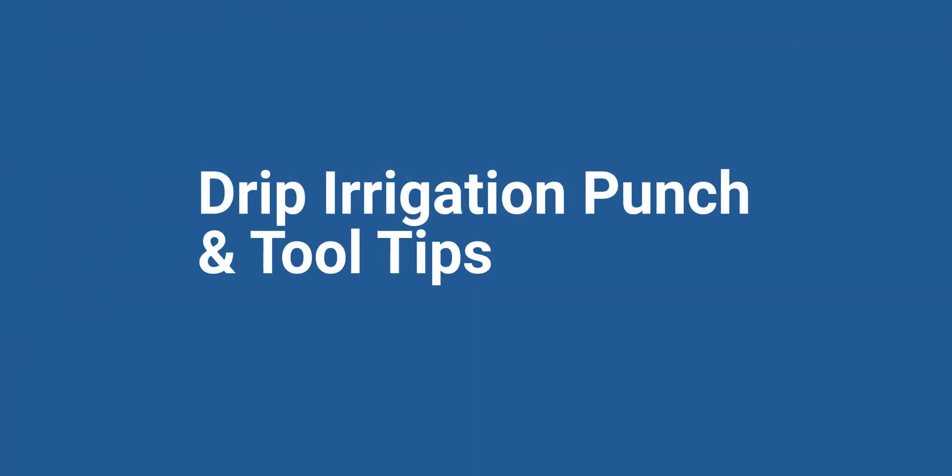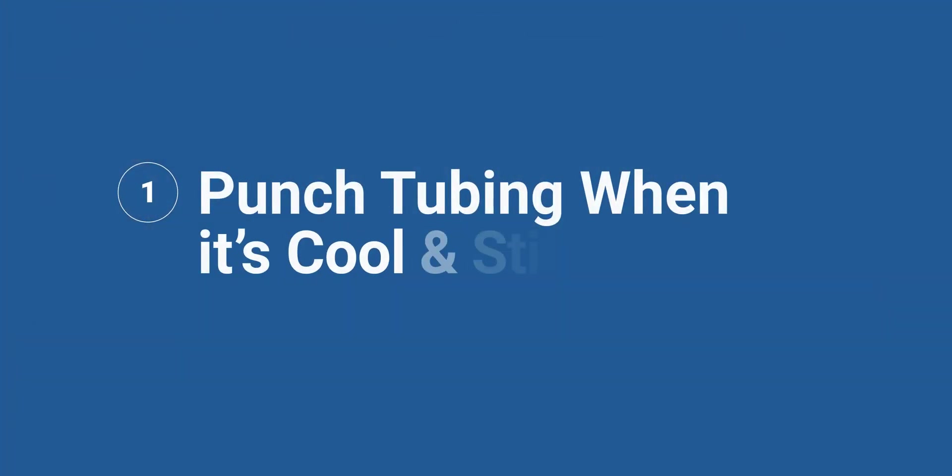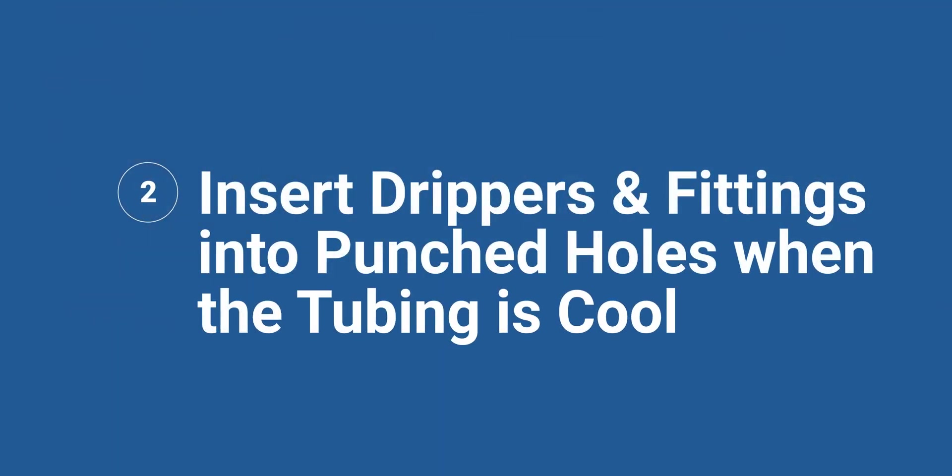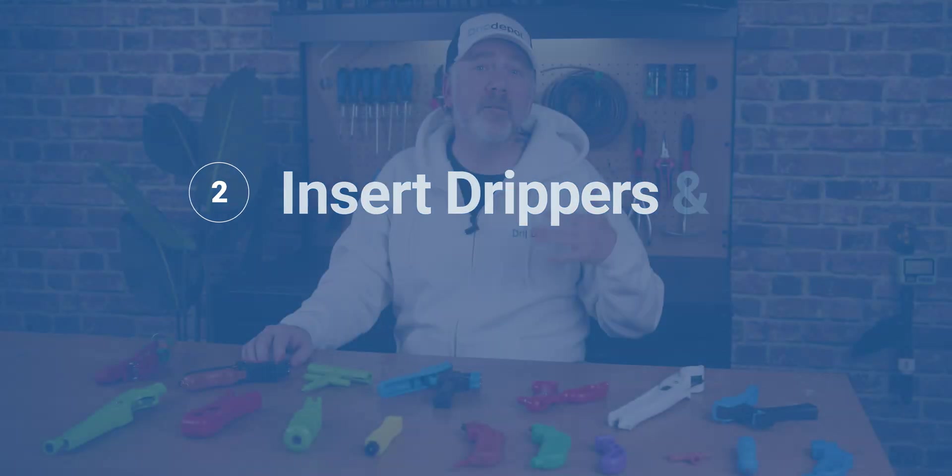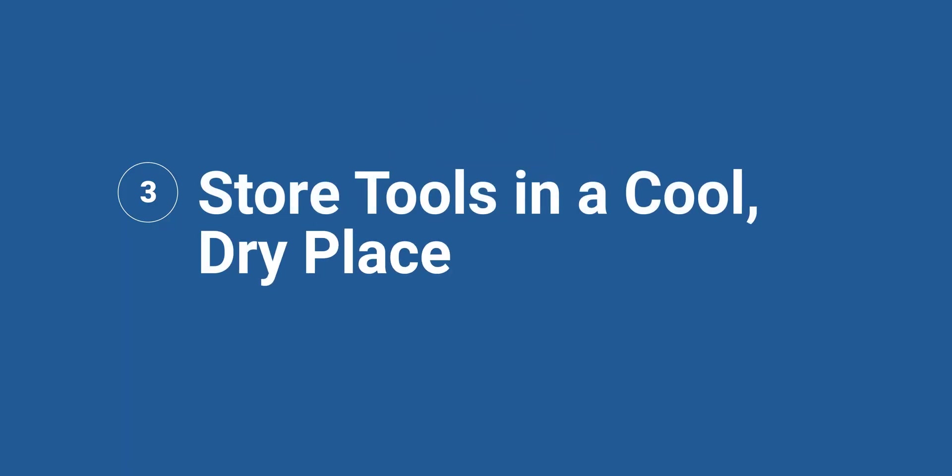Now for those tips and tricks you've been waiting for. While the punches and tools are all pretty straightforward and easy to use, there are a couple tips that will make getting the most out of them much easier. Number one, when punching tubing, do it early or late when the tubing is cooler. Cooler tubing is stiffer, which helps the punch pop through it instead of stretching the tubing. Number two, for the same reason, insert button drippers and one-quarter inch fittings into the wall of one-half inch or larger tubing when it is cooler. It helps the fitting pop into that hole instead of stretching the hole.